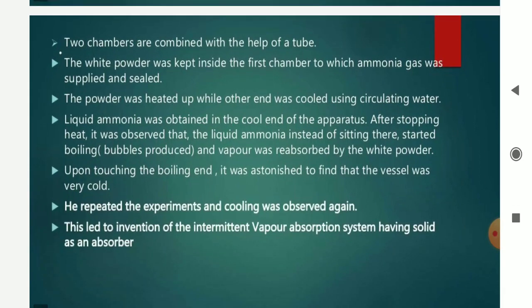In this system, a white powder of ammonia is kept inside the first chamber, to which ammonia gas was supplied in a sealed fiber. The powder was heated at one end and cooled using circulating water at the other end. Liquid ammonia was obtained at the cool end of the apparatus, and after stopping the heat, it was observed that the liquid ammonia started boiling. The formation of bubbles was clearly observed during boiling of ammonia, and the vapors were reabsorbed by the white powder.